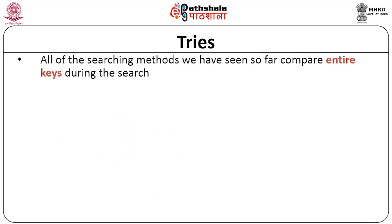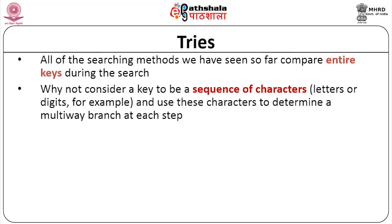All the searching methods of balanced trees we have seen so far compare entire keys during the search. Now, why not consider a key to be a sequence of characters — letters or digits — and use these characters to determine a multi-way branching at each step? We are looking at a key not as a whole key but as a sequence of characters, and we use these characters to determine the multi-way branching.